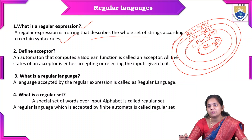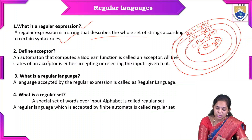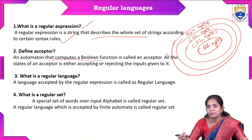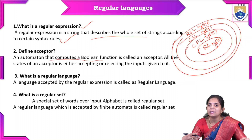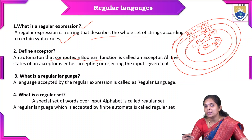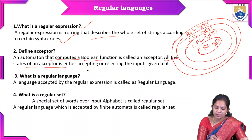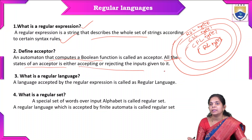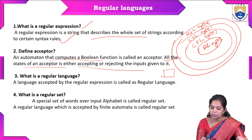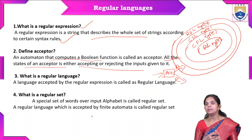Next, define acceptor. An acceptor is an automata that computes a Boolean function. When we give one input, it will either accept or reject — that is a Boolean value, either yes or no, or true or false. So when we give one input, it will accept or reject — that is the acceptor.